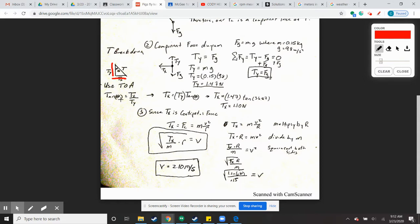Tangent of theta equals Tx divided by Ty. If I rearrange this solving for Tx, I'll multiply by Ty on both sides, and I end up with this equation.